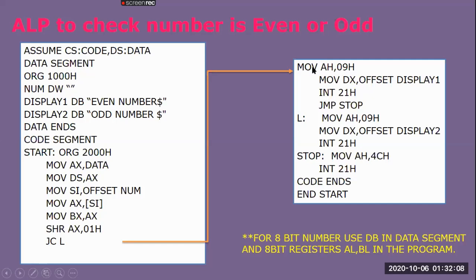If there is no carry, message 1 — the even number message — has to be displayed. Using the display routine: MOV AH, 09h; MOV DX, offset display1; INT 21h. Then we do a JMP to 'stop', because once it is confirmed as an even number there is no need to check the other condition.